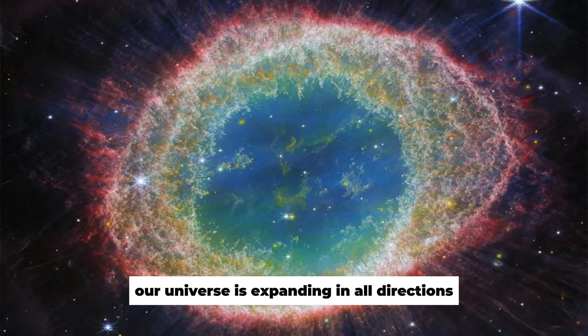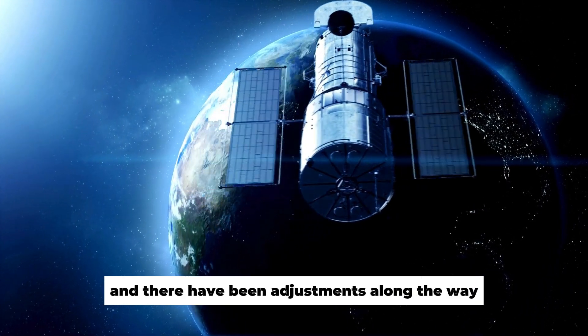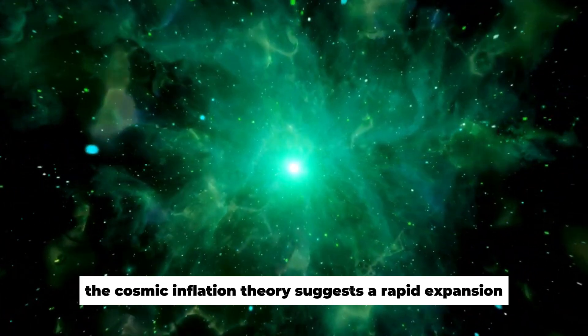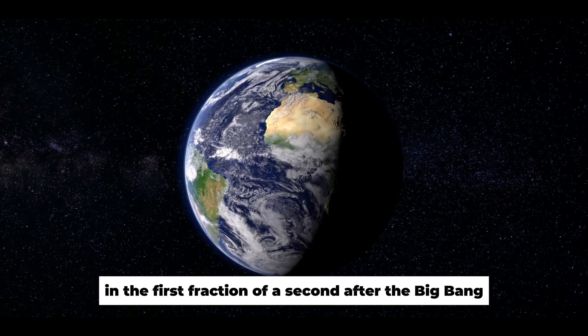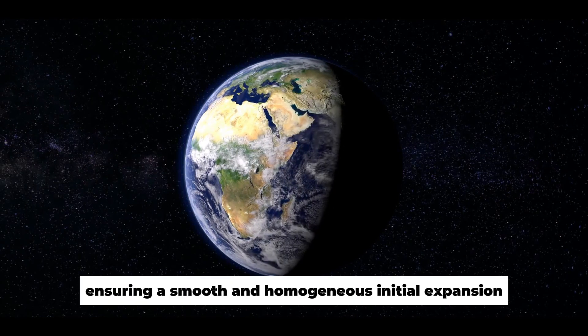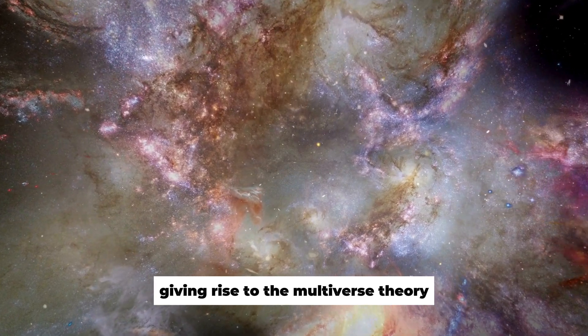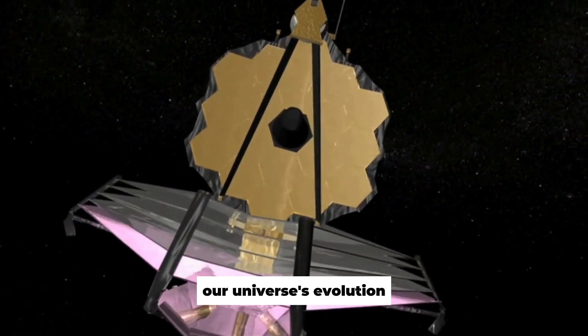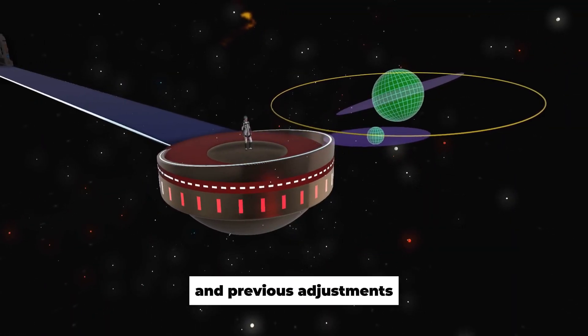Hubble saw that galaxies far away from Earth seem to be moving away faster, suggesting that our universe is expanding in all directions. Ideas like dark matter and dark energy were developed based on Hubble's findings, and there have been adjustments along the way, like adding the concept of cosmic inflation. The cosmic inflation theory suggests a rapid expansion in the first fraction of a second after the Big Bang, ensuring a smooth and homogenous initial expansion. However, loopholes persisted, giving rise to the multiverse theory, proposing an infinite number of universes. Despite these efforts to clarify our universe's evolution, the recent Webb revelation challenges the validity of the Big Bang theory and previous adjustments.